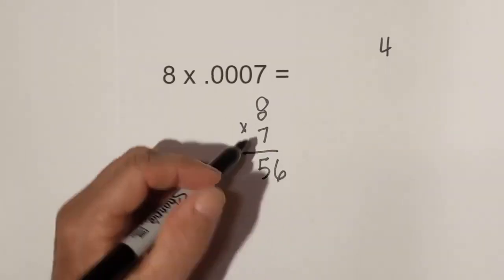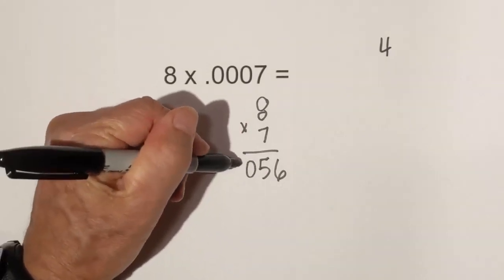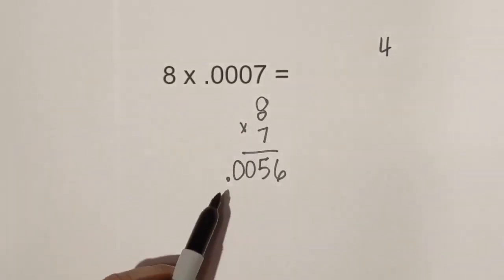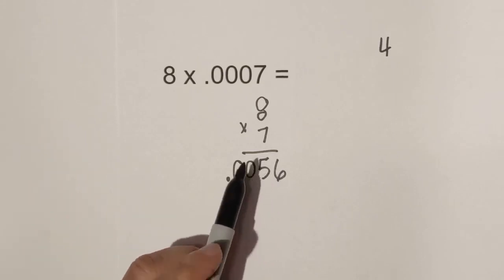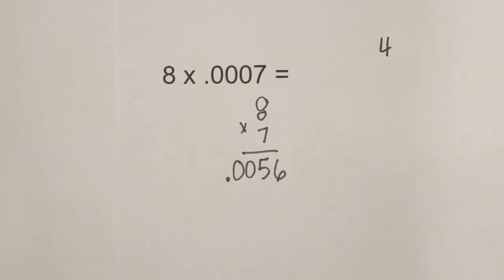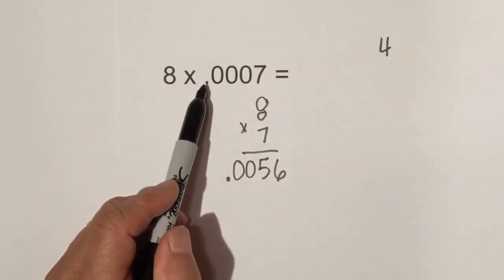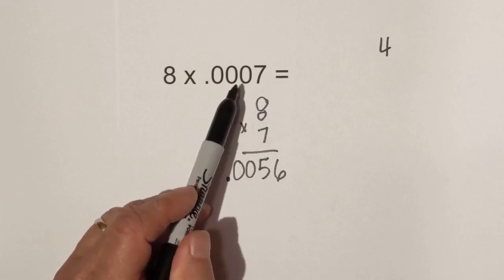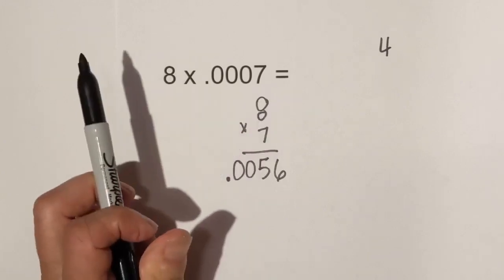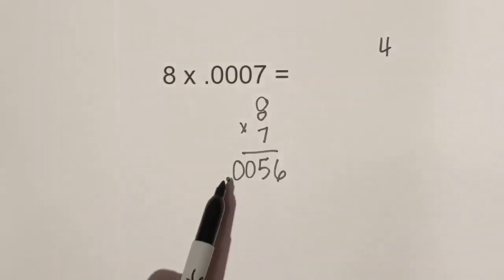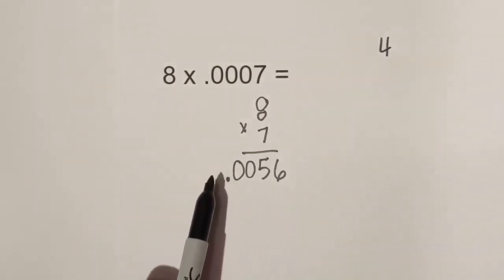We have 1, 2, 3, 4 — the decimal goes right here, so it is 56 ten-thousandths. In summary: step one is to count how many numbers are to the right of the decimals, then multiply as if there are no decimals, and once you get that answer, make sure you have the same number you counted originally to the right of the decimal point.